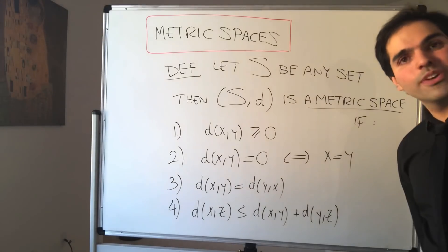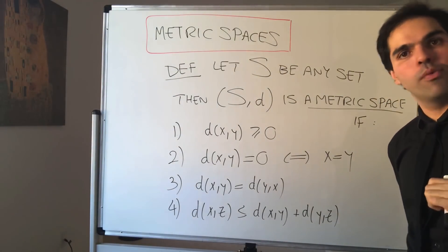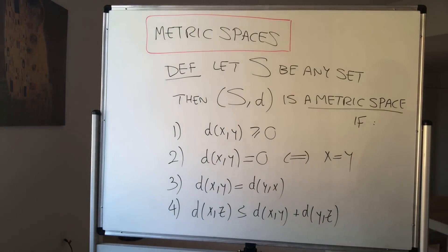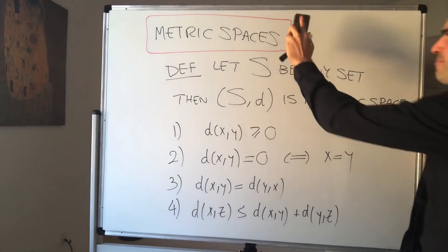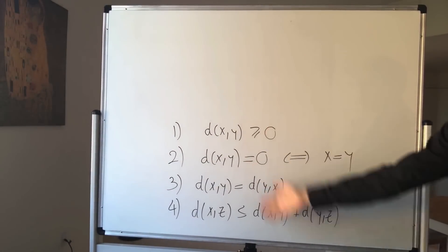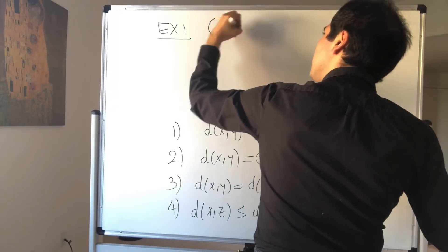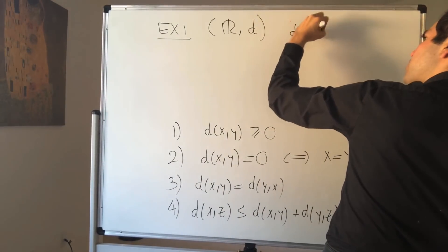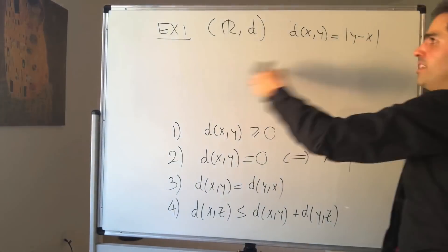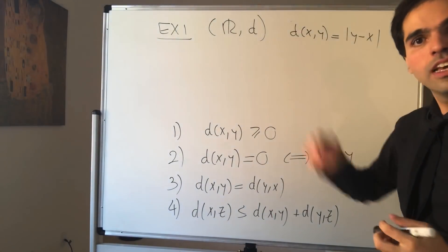It seems like a weird definition, but similar to before. To show you how powerful this is, let me give you ten examples of metric spaces that occur in nature — very important examples you'll see throughout this course, except maybe the last two, which are a bit exotic. Of course, the first example is the one we've already seen: the real numbers with the distance function d(x, y) = |y − x|.